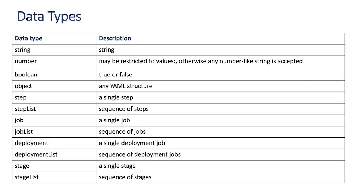Let's look at all those one by one. These are the popular data types that we will be regularly using in Azure DevOps pipeline. The first one is string, next one is number, we have boolean, we have something called an object, and we have something called step, step list, job, job list, deployment, deployment list, stage, and stage list.